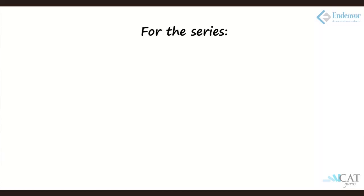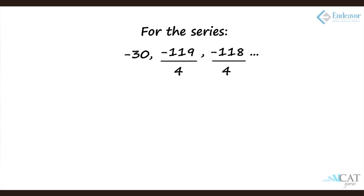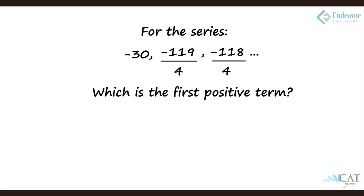Second question: we have a series where the first term is minus 30, the second term is minus 119 by 4, and the third term is minus 118 by 4, and so on. We need to find the first positive term. Rewriting: the first term is minus 120 upon 4, the second is minus 119 upon 4, the third is minus 118 upon 4 — so the series is increasing by 1/4.